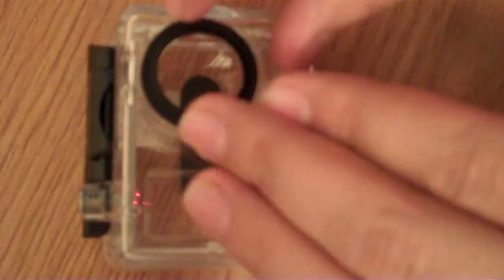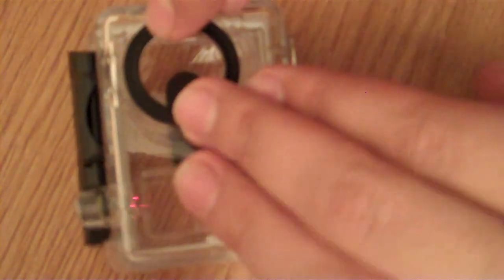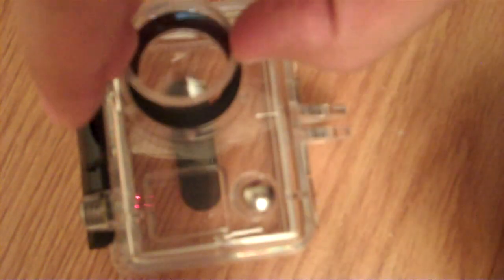The next thing you want to do is grab a seal and with the ridged side up, put it on the case. Then you're going to grab a lens and place it over the seal.